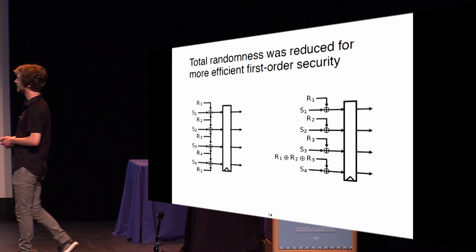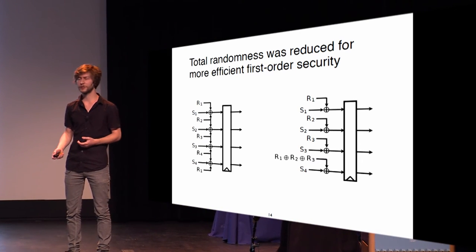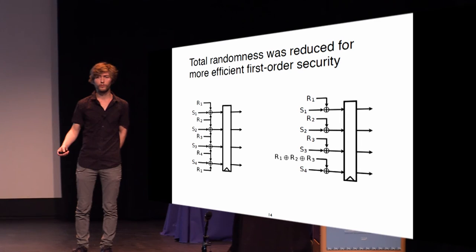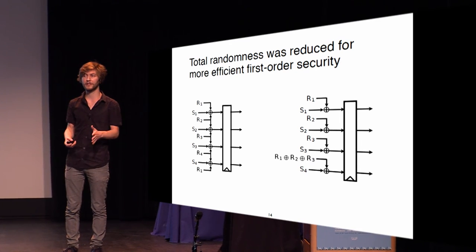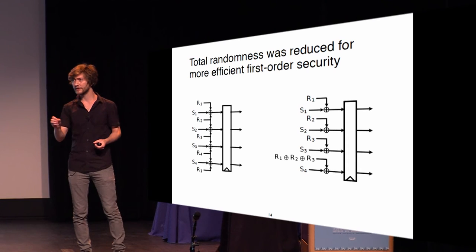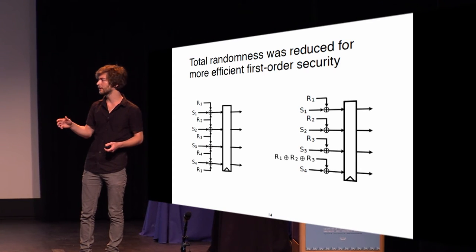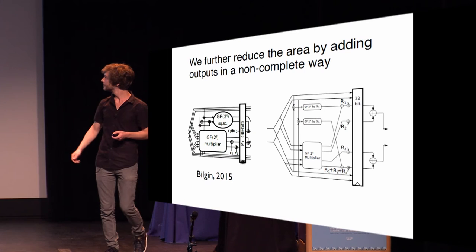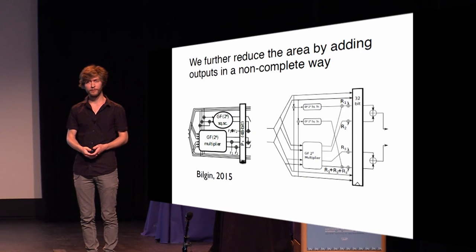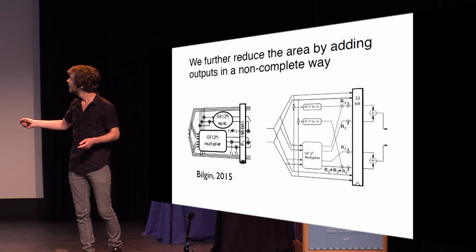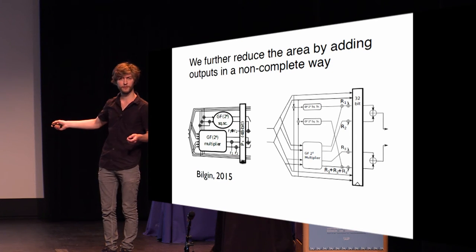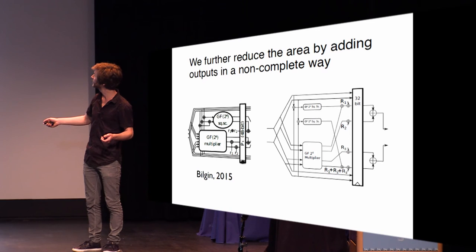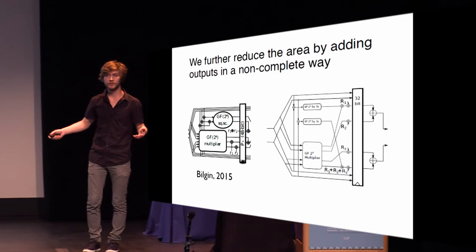The mask refreshing is generically done using a ring refreshing scheme, which means we use an equal number of random bits as we have output shares. For first order we only need univariate security — we do not allow the attacker to combine points in time across clock cycles. That is why we can get away with using one unit of randomness less. We also add the square-scalar function before the register to save some space.